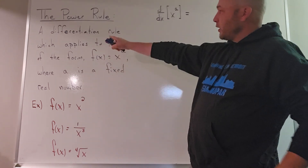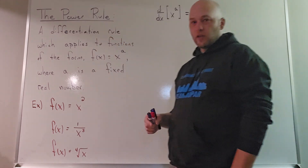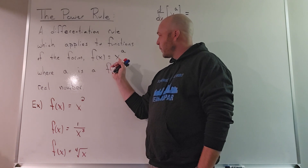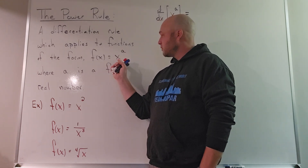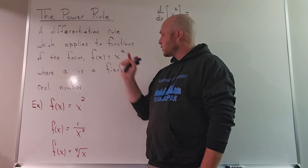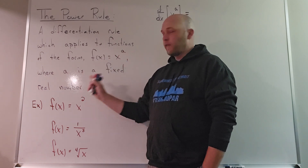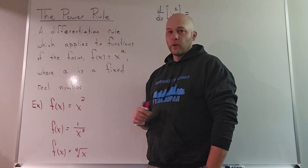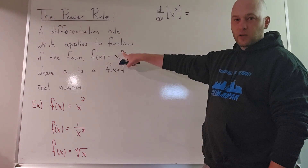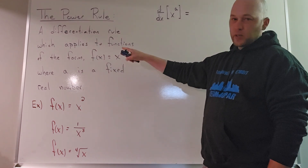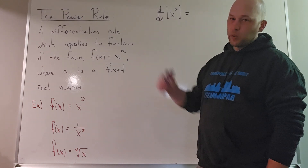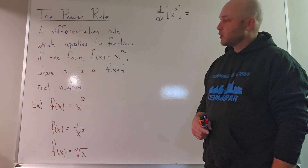The power rule applies to functions of the following form: the function has a base and an exponent. The base is the variable, the independent variable x. The exponent is a, where a is a fixed real number. It's important that x is the variable and a is a fixed real number. If those are reversed, that would be an exponential function, and the power rule does not apply to exponential functions.